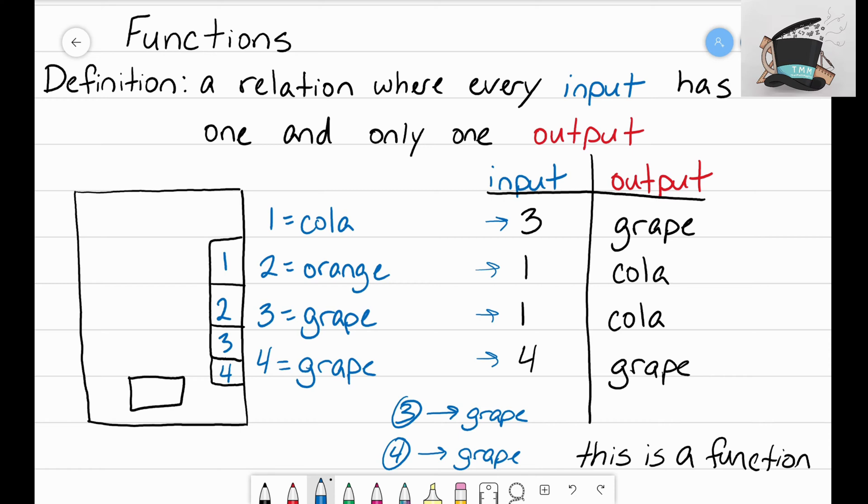The only time you end up not having a function is when you have an input that gives you two different outputs. So let's modify this and see how could I make this not a function. Well, what if someone went back up to the vending machine, they hit button number three again, and out popped an orange soda?